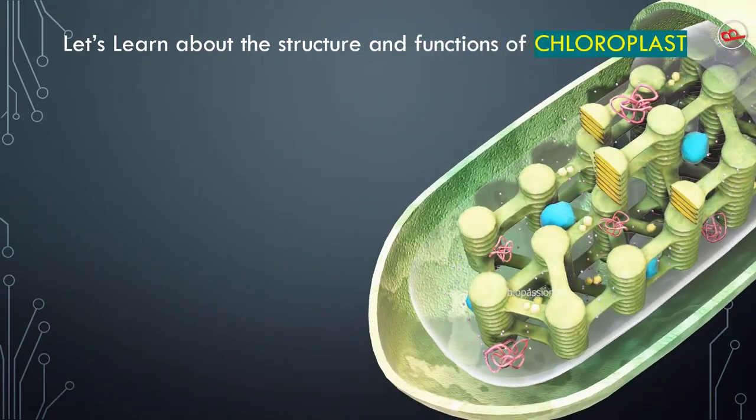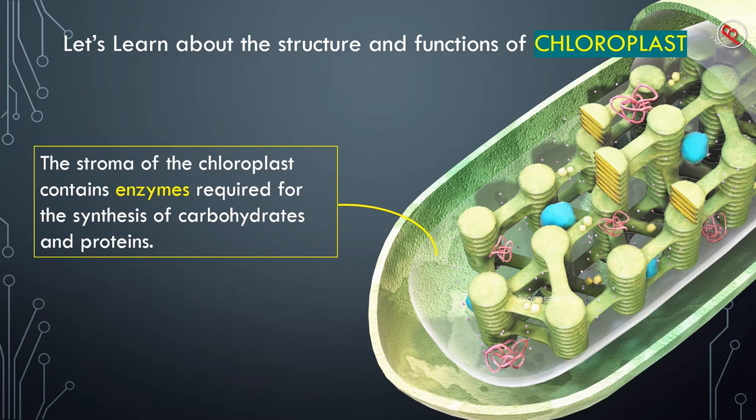As I already mentioned, the entire space stroma of the chloroplasts contains enzymes required for the synthesis of carbohydrates and proteins. Now you come to know why chloroplasts are called kitchen of the plant cell, because they are synthesizing carbohydrates and proteins which are the major constituents of the food.